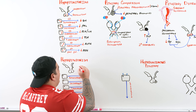Treatment of hypopituitarism focuses on replacing missing hormones: hydrocortisone for adrenal insufficiency, thyroid hormone for hypothyroidism, testosterone or estrogen for hypogonadism, growth hormone for GH deficiency, and desmopressin for central diabetes insipidus. If a tumor is present and operable, it can be resected transsphenoidally.